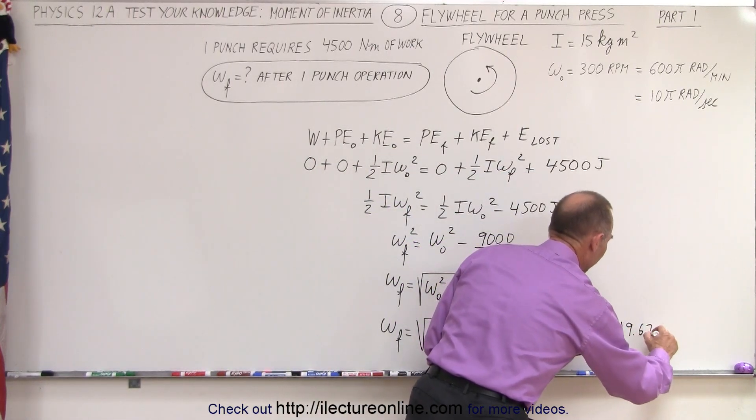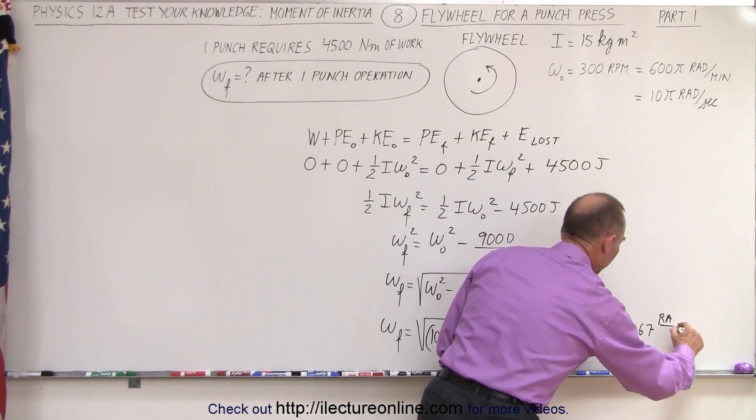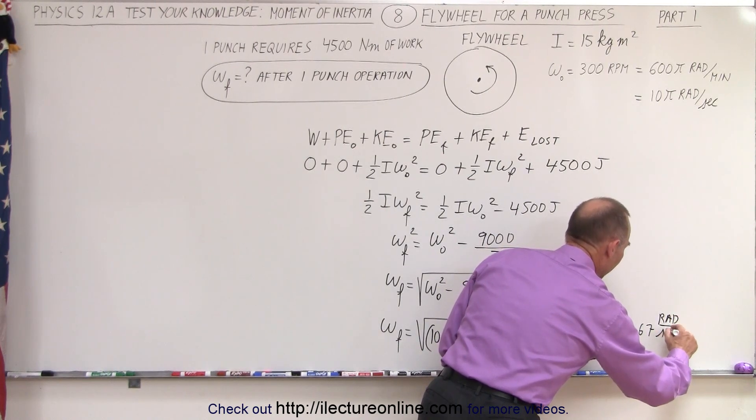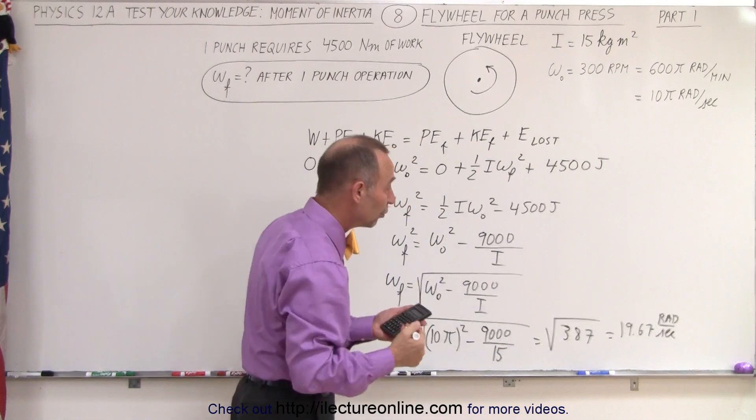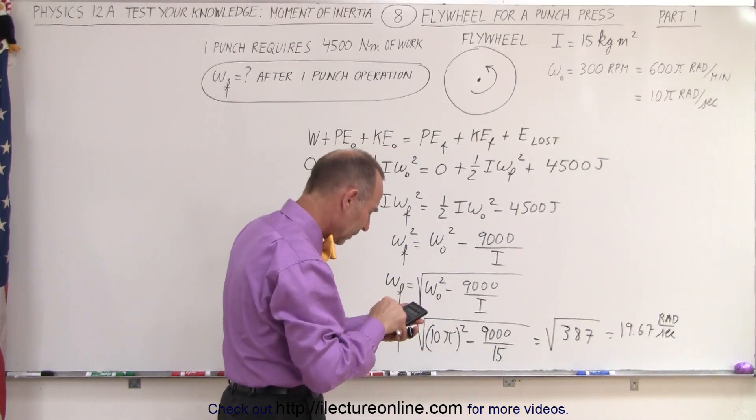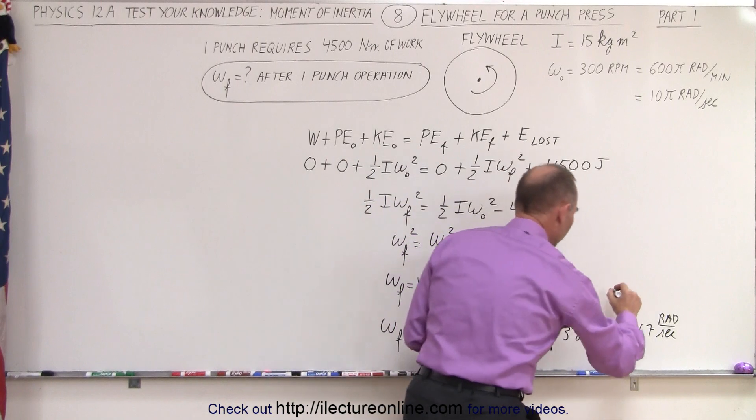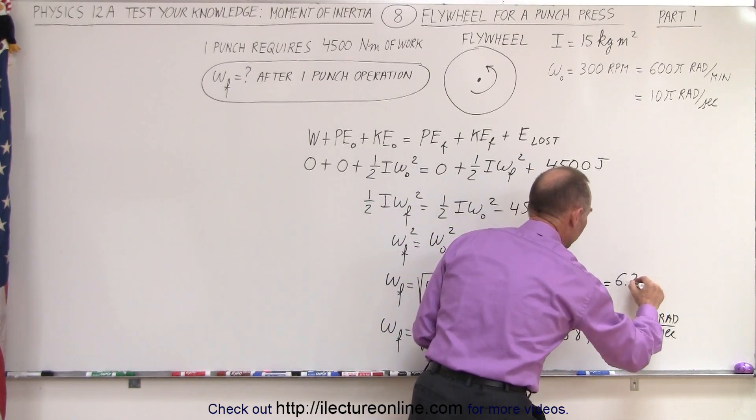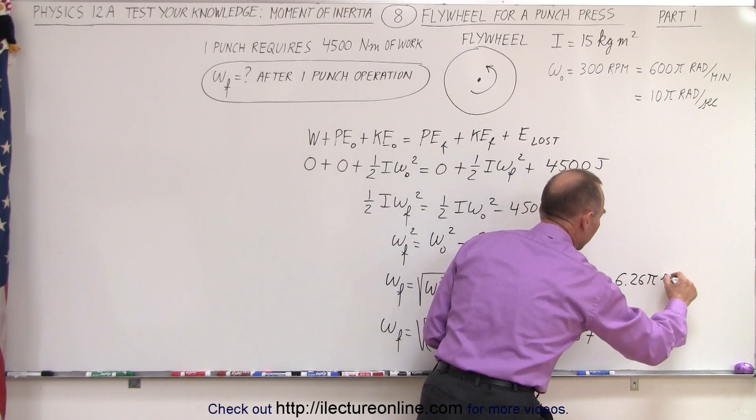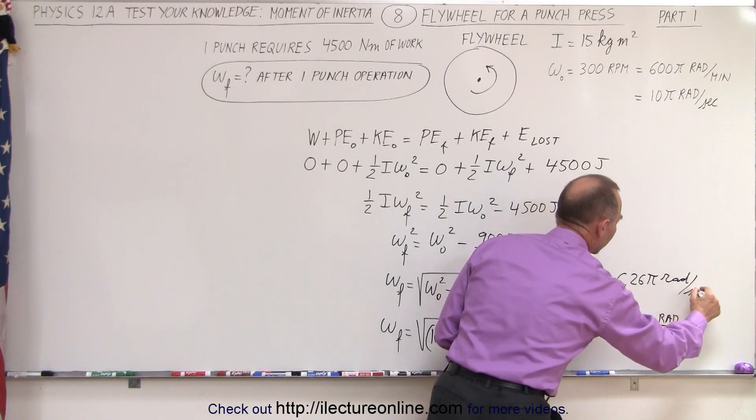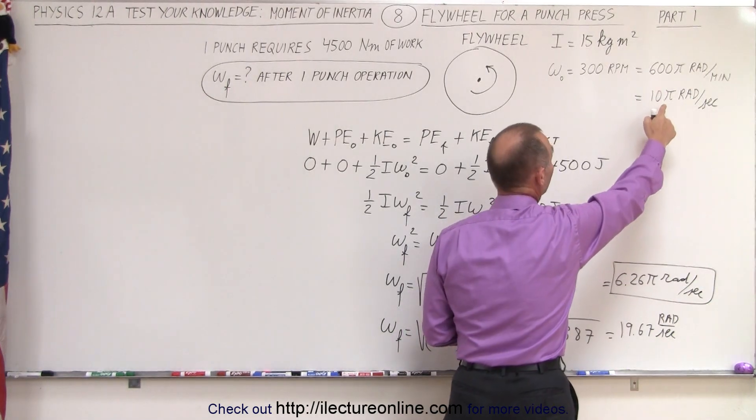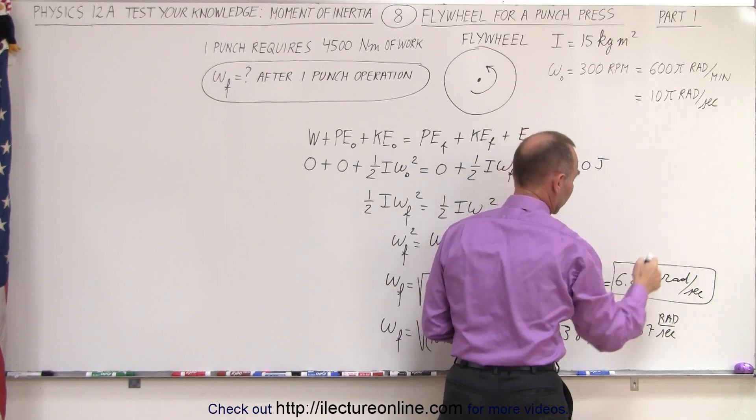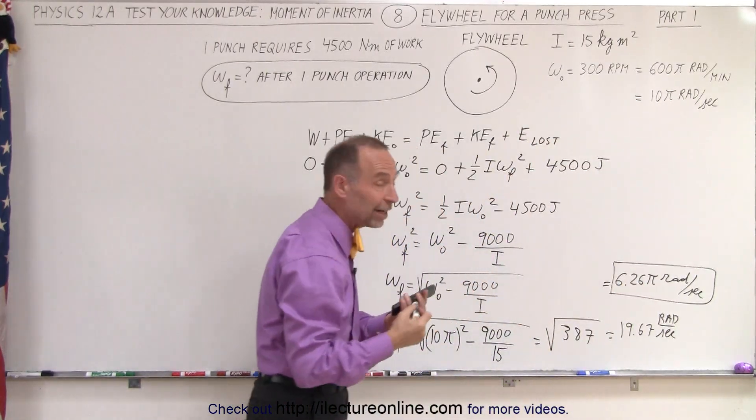19.67 radians per second. And then so we can compare it to our original value, let's then put that into π radians per second, so divide by π is at 6.26. So this is equal to 6.26π radians per second. So notice that the speed is then reduced from 10π radians per second down to 6.26π radians per second.